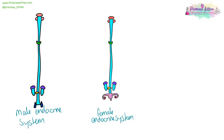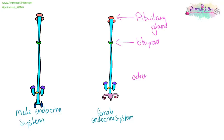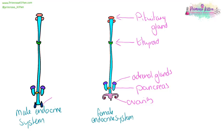Here we have the male and female endocrine system. The pituitary gland is in the brain. The thyroid is in the neck. The adrenal glands are near the kidneys. The pancreas is hiding behind the stomach. The ovaries are at about hip level, and the testes hang below the penis.